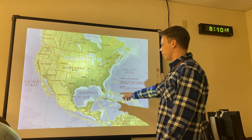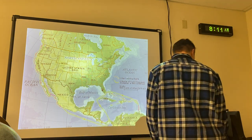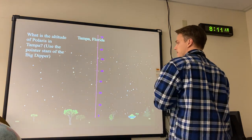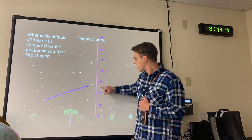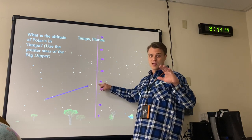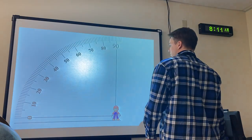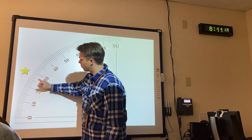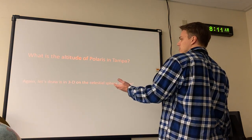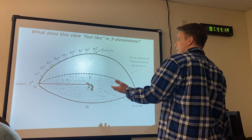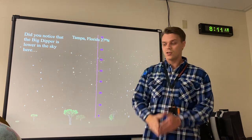Now let's look at Florida, which is at a lower latitude. Tampa, Florida — using the Big Dipper's last two stars pointing to the North Star — Polaris appears to be about 27 to 28 degrees in the sky, not 41 degrees like in New York. And sure enough, Tampa, Florida is at about 27 degrees north latitude.